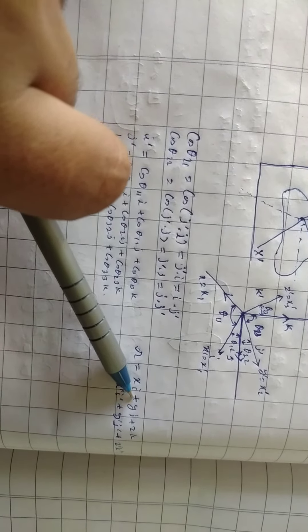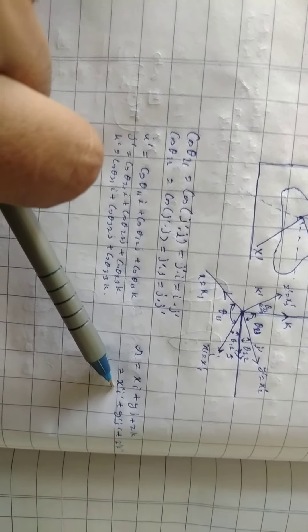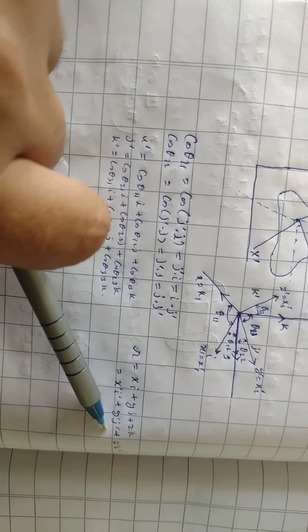r equals x i plus y j plus z k, which equals x dash i dash plus y dash j dash plus z dash k dash.